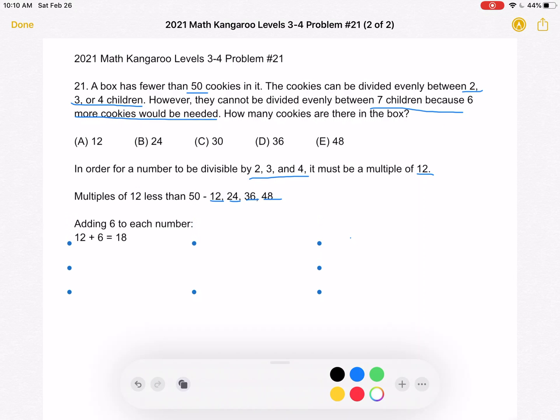12 plus 6 is 18. 18 is not a multiple of 7. 24 plus 6 is equal to 30. That's also not a multiple of 7.